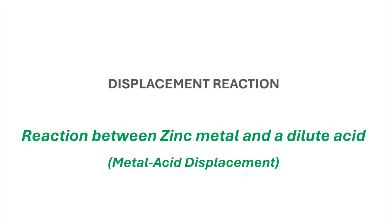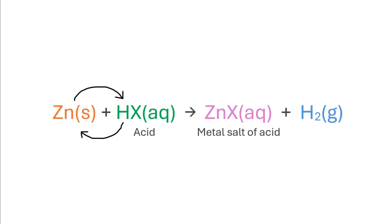Specifically, it is a metal-acid displacement reaction because there is a displacement or an exchange in the relative positions of zinc atoms and hydrogen from the acid. The more reactive zinc displaces the lesser reactive hydrogen from the acid to form the corresponding metal salt in its aqueous state. This reaction is also a common demonstration of the nature of metals when they react with dilute acids.